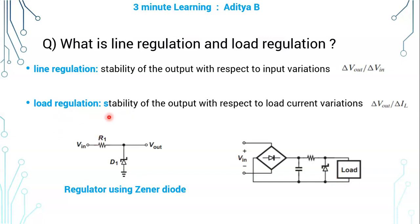Load regulation means stability of the output voltage with respect to load current variations. Load doesn't always take a constant current. For example, if you consider an air conditioner as a load, sometimes if the compressor is on, it takes more current. If the compressor is off, only fans and swinging blades are on, it takes less current.